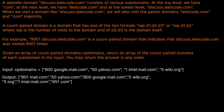Let's read the question prompt. A website domain like discuss.leetcode.com consists of various subdomains. At the top level we have com, at the next level we have leetcode.com, and at the lowest level discuss.leetcode.com. When we visit a domain like discuss.leetcode.com, we also visit the parent domains leetcode.com and com implicitly. A count-paired domain has one of two formats: rep d1.d2.d3 or rep d1.d2, where rep is the number of visits and d1.d2.d3 is the domain. For example, 9001 discuss.leetcode.com indicates that domain was visited 9001 times. Given an array of count-paired domains, return an array of the count-paired domains of each subdomain. You may return the answer in any order.